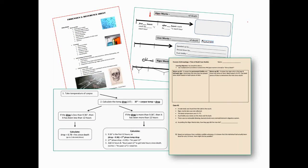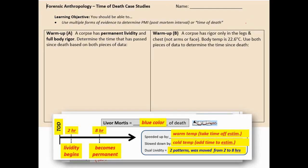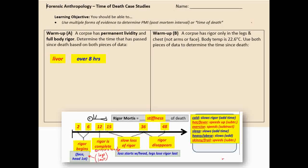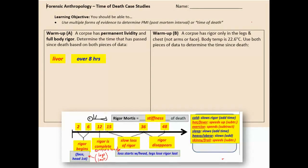Let's try warm-up A. The corpse has permanent lividity and full body rigor — determine the time that has passed based on both pieces of data. First, let's try the lividity or livor mortis. Permanent lividity means it's been more than eight hours — that comes right off your timeline.